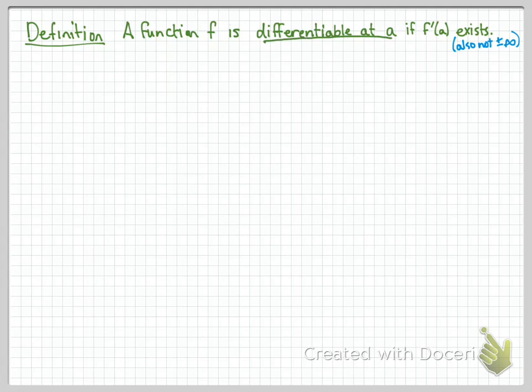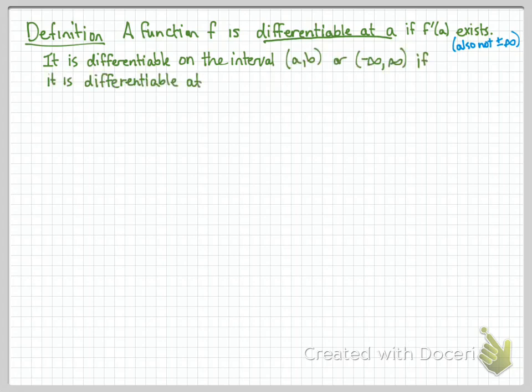The word differentiable means has a derivative. So a function is differentiable at a if it has a derivative at a. That is, f prime of a exists. Notice that when we talk about limits existing they might be infinite, but derivatives can't be infinity or negative infinity. That's just the rule. Okay, so that's differentiable at a point. It's differentiable on an interval if it has to have a derivative at every point in that interval. So for every x value in the interval the derivative needs to exist.